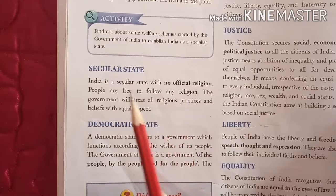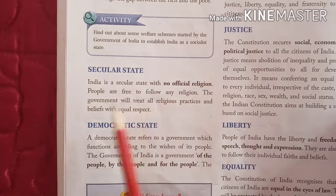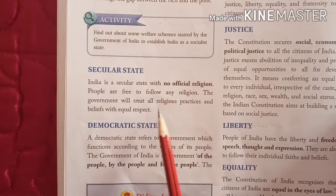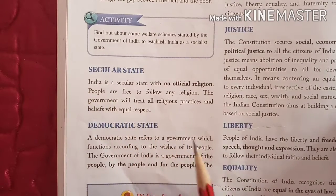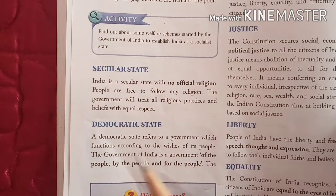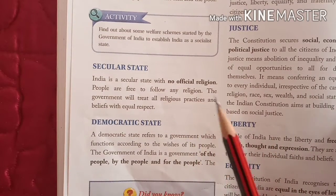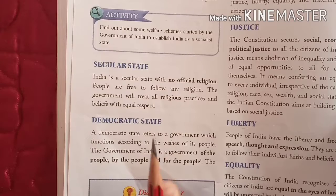India is a secular state with no official religion. People are free to follow any religion — Sikhs, Muslims, Hindus, Christians all live here — and the government will treat all religious practices and beliefs with equal respect. There are no rules restricting which religion a person can follow.